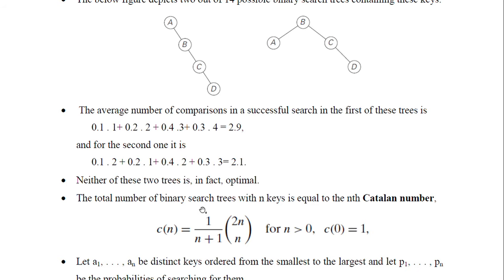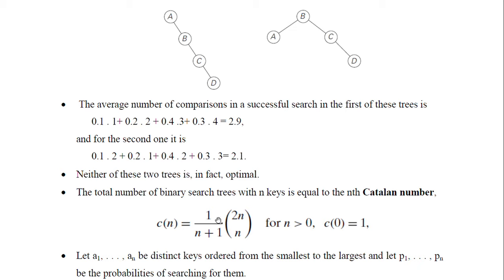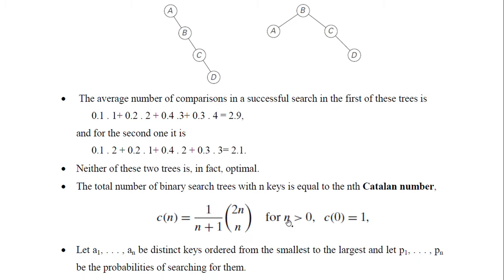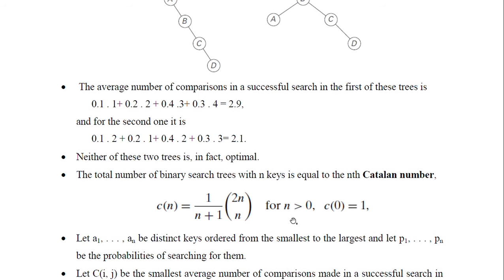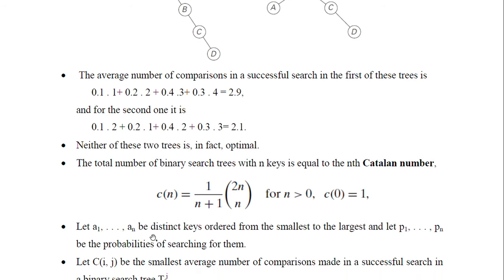The number of binary search trees that can be formed with N keys is called the Catalan number. It is given as C(N) = 1/(N+1) * C(2N, N), where N is the number of keys used to form the binary search trees.